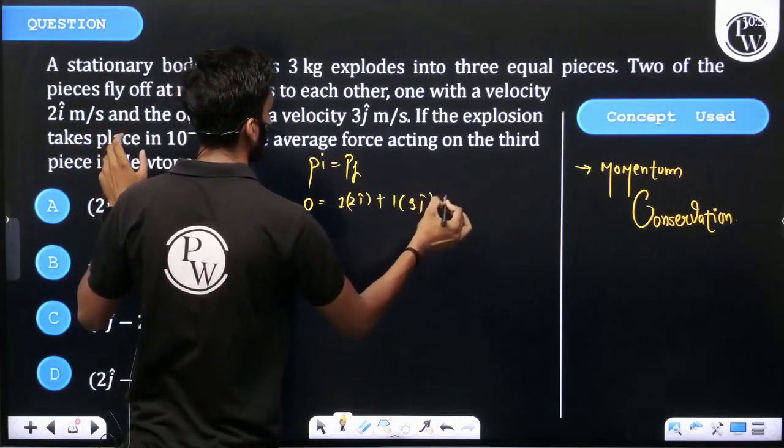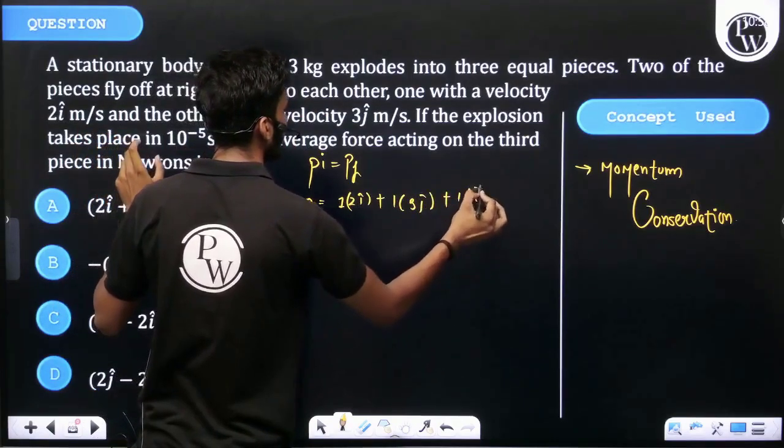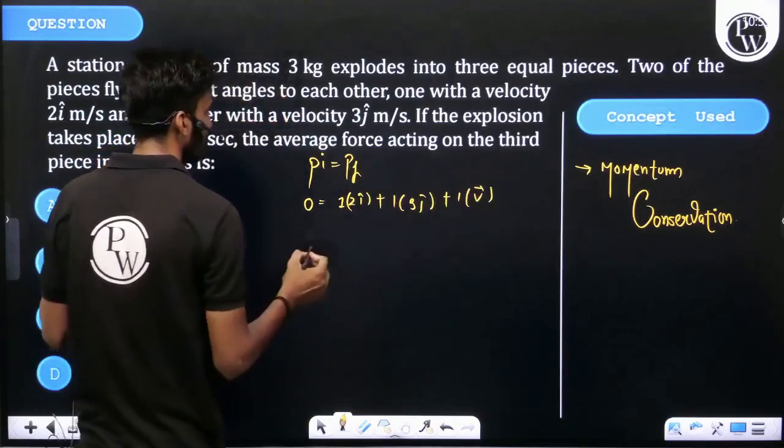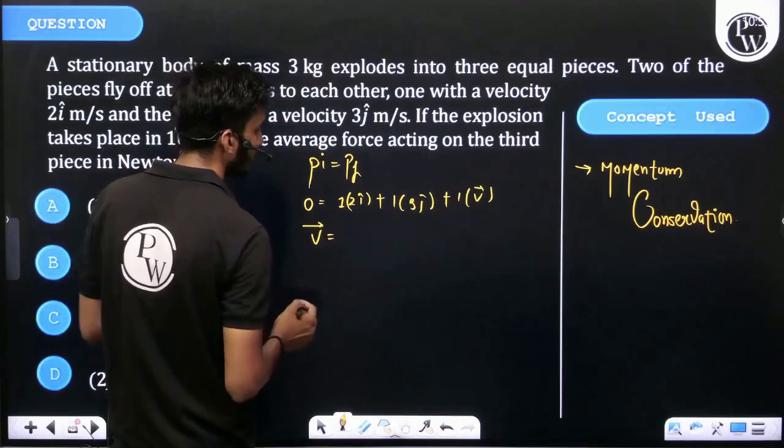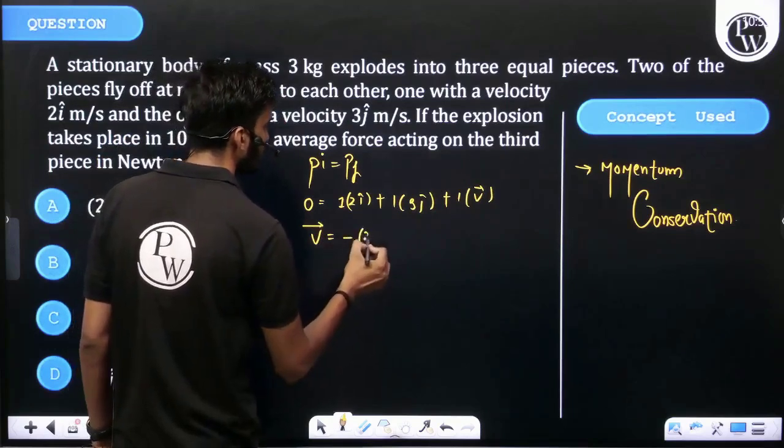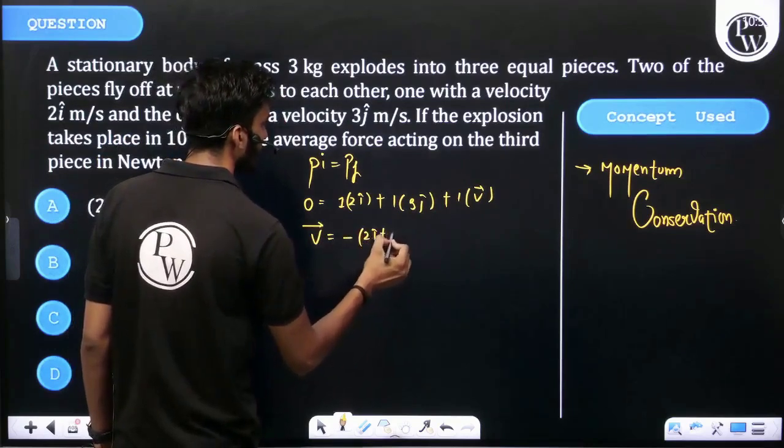Let the third piece velocity be vector v. Then we can get the velocity of the third piece as minus 2i cap plus 3j cap.